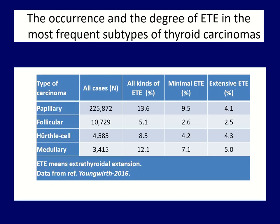Moving to the next topic — the occurrence of ETE spread in the most frequent subtypes of thyroid cancer — this large American database included more than 240,000 surgically treated patients. The occurrence of extra-thyroidal spread was lower than in most papers published in the literature. This might be explained by the difference in skills of an average versus a highly experienced evaluation group. The table is suitable to compare extra-thyroidal spread in different subtypes of thyroid cancers.